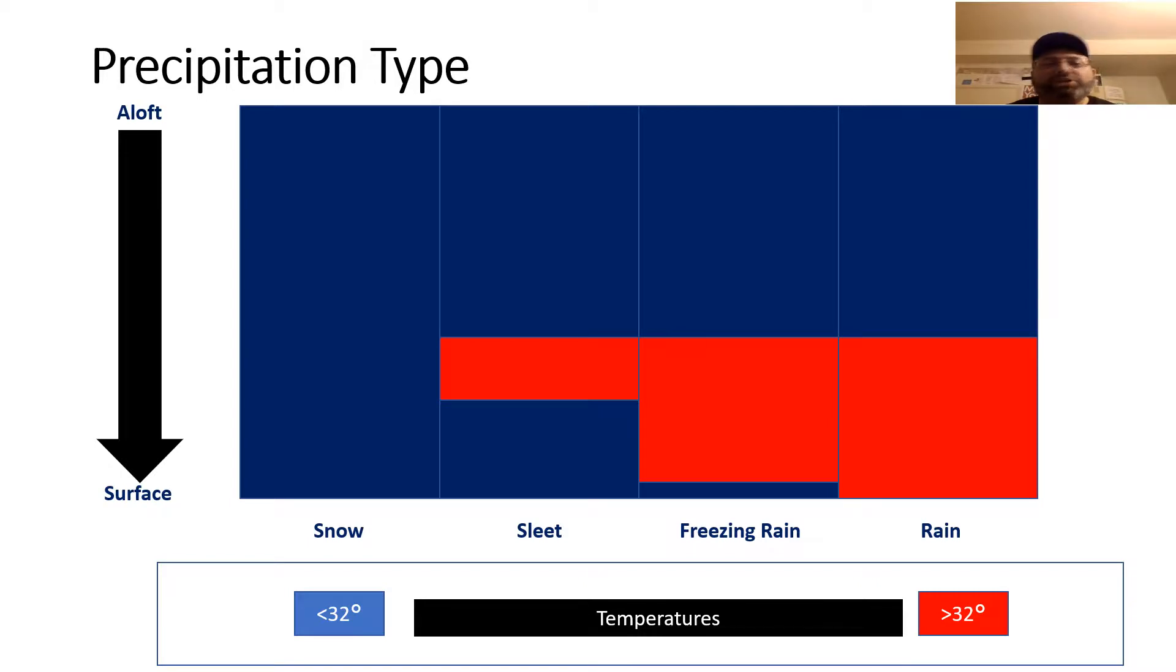I wanted to give you a quick idea, especially for folks who are new and don't know how this whole thing works. This is very simplified, but I want to give you an idea of what we're trying to forecast here. What you're looking at is a diagram I created to explain how precipitation type works. The bottom line is this: if it's below 32 degrees all the way aloft, all the way to the ground, you get snow.